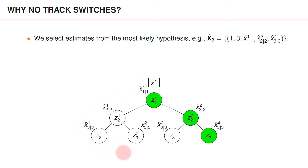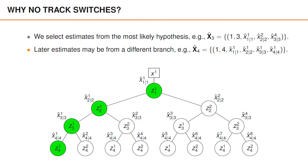It may be interesting to understand why the PMBM tracker does not report trajectory estimates with unreasonable switches. In the example below, we have illustrated a hypothesis tree for a single object, which is enough to understand how this works. Suppose that at time 3, the most likely hypothesis is the hypothesis marked in green. We then output a trajectory estimate corresponding to that hypothesis. Under the assumption that we only have one object, our estimate of the set of trajectories at time 3 would simply be a trajectory that starts at time 1, ends at time 3, and takes the values x̂(1|1,1), x̂(2|2,2), and x̂(3|3,4) during that interval.